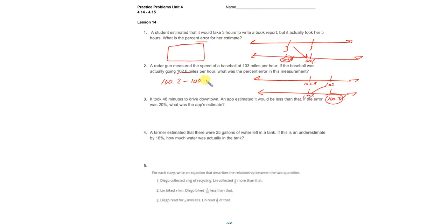Number three: It took 48 minutes to drive downtown and the app estimated it would be less than that. If the error was 20%, what was the app's mistake? These apps sometimes will be off on their estimation. 20% is pretty harsh - let's see what that ends up being.